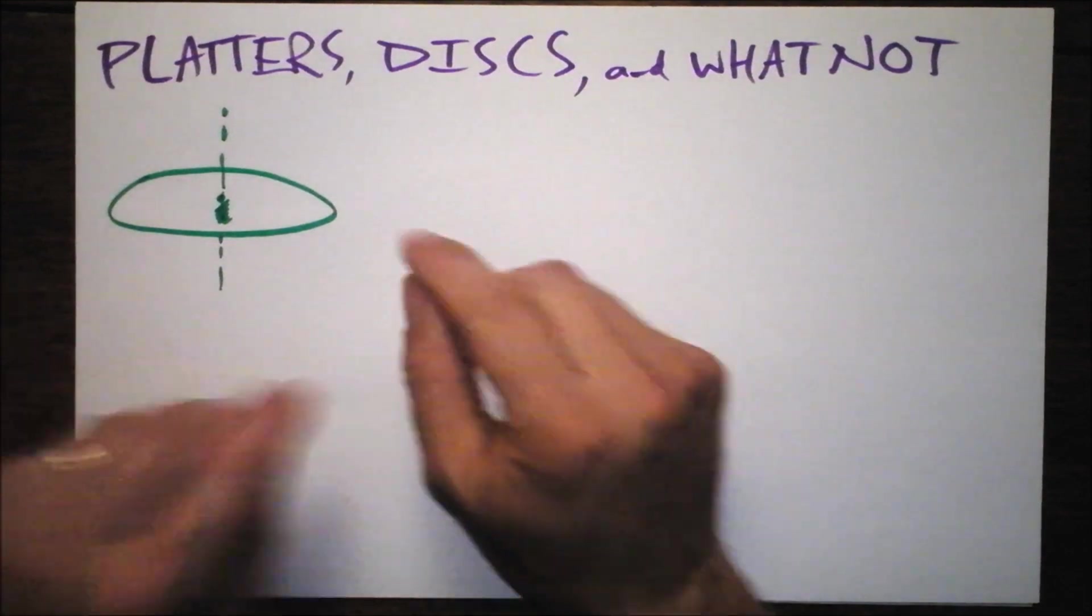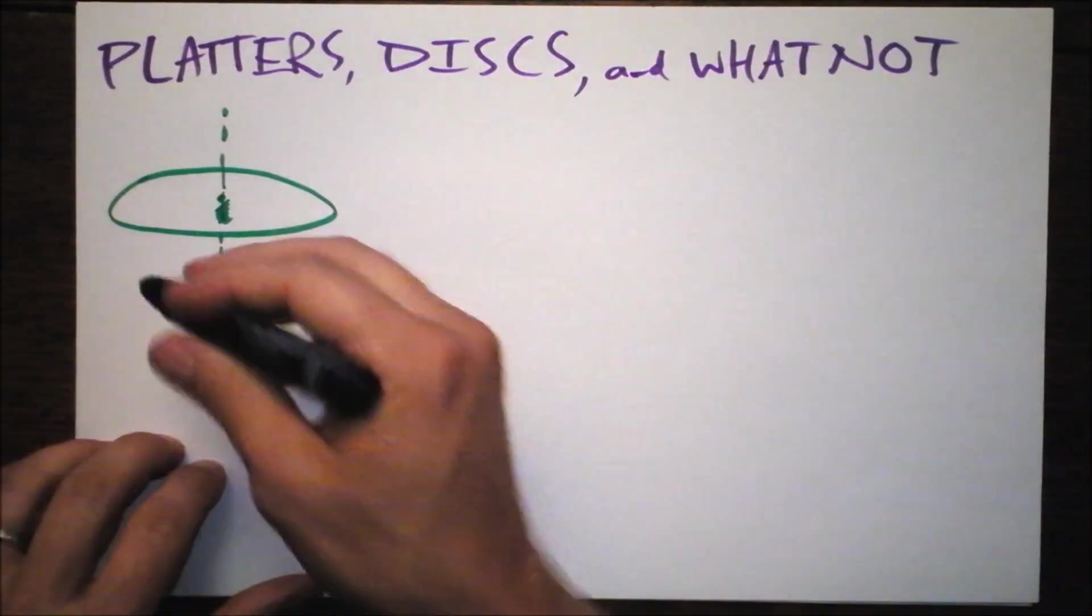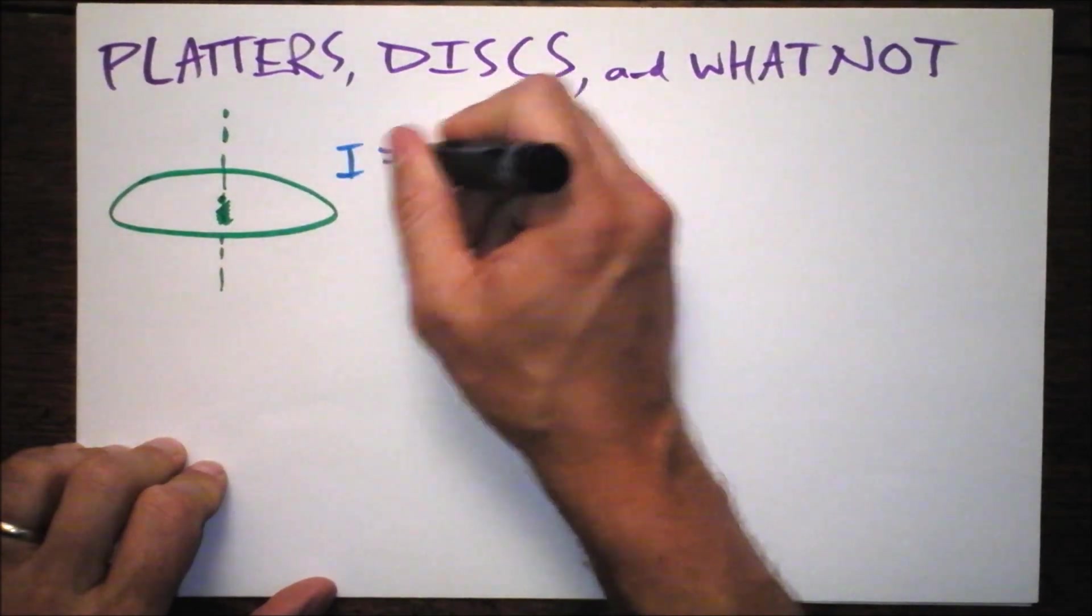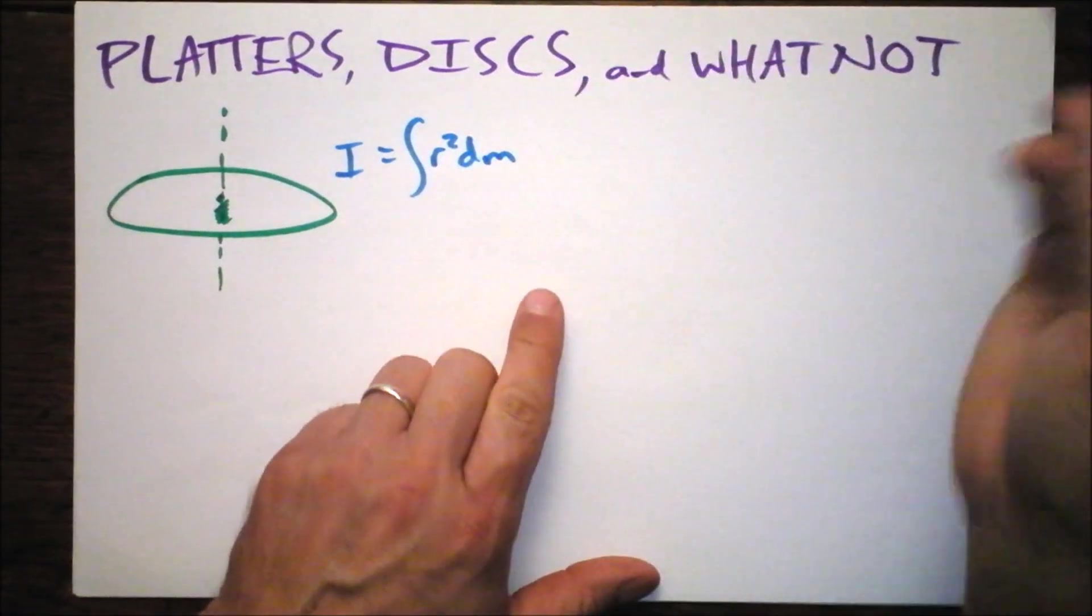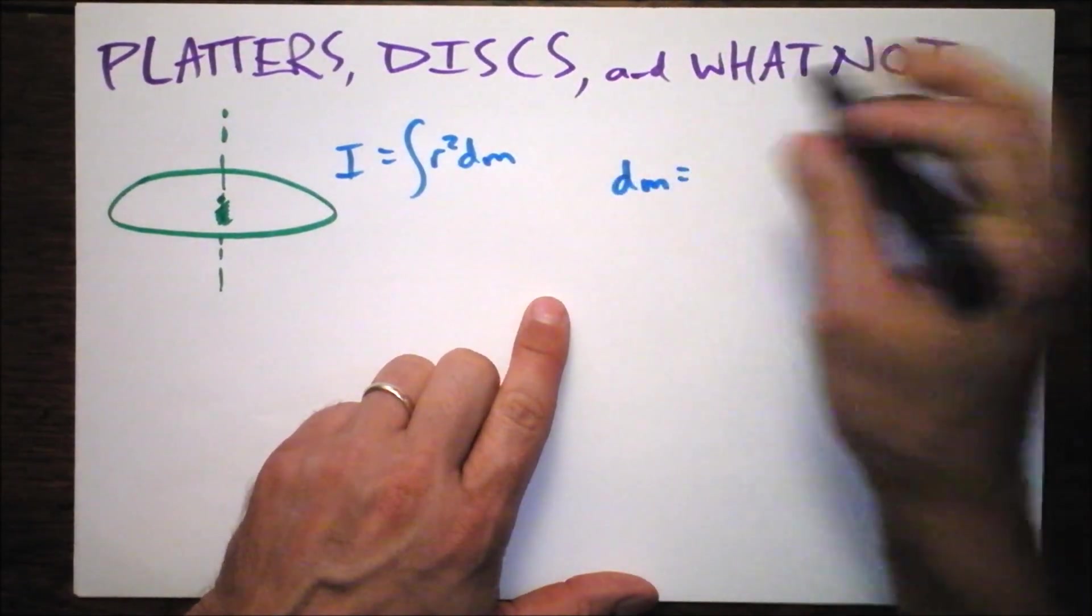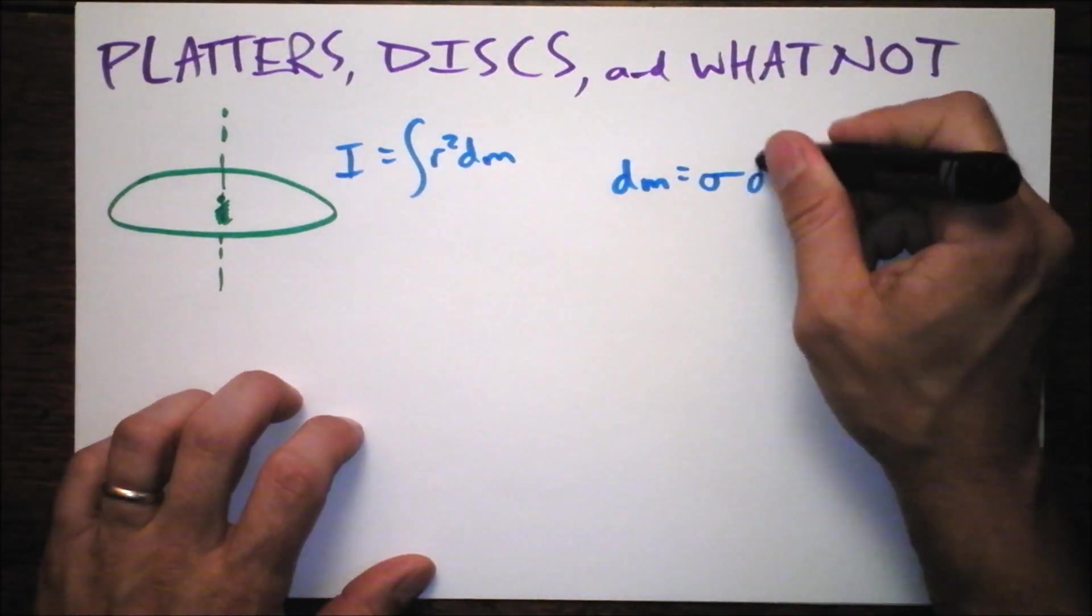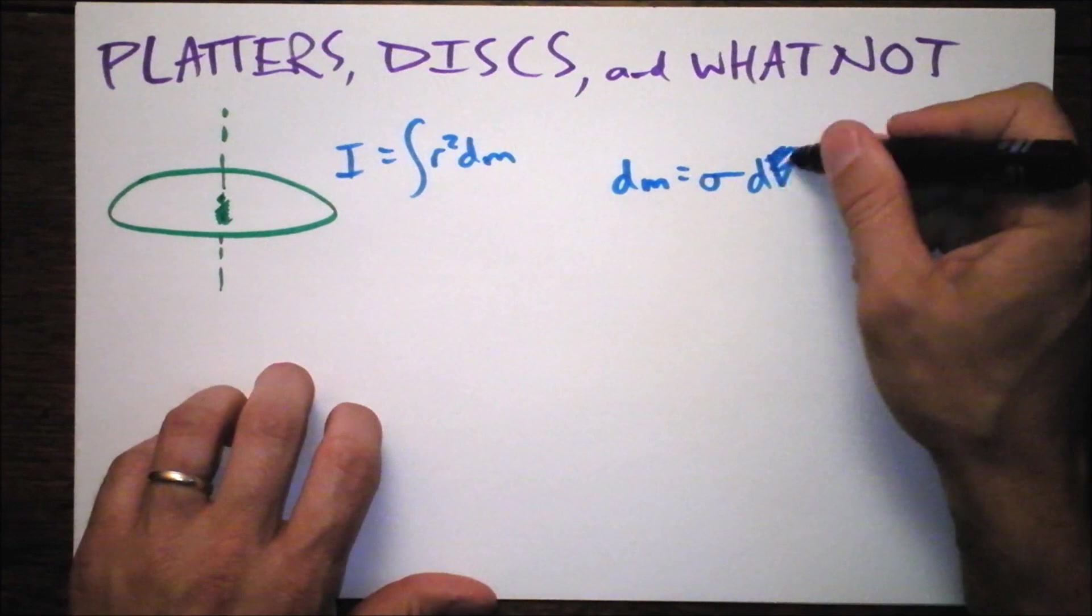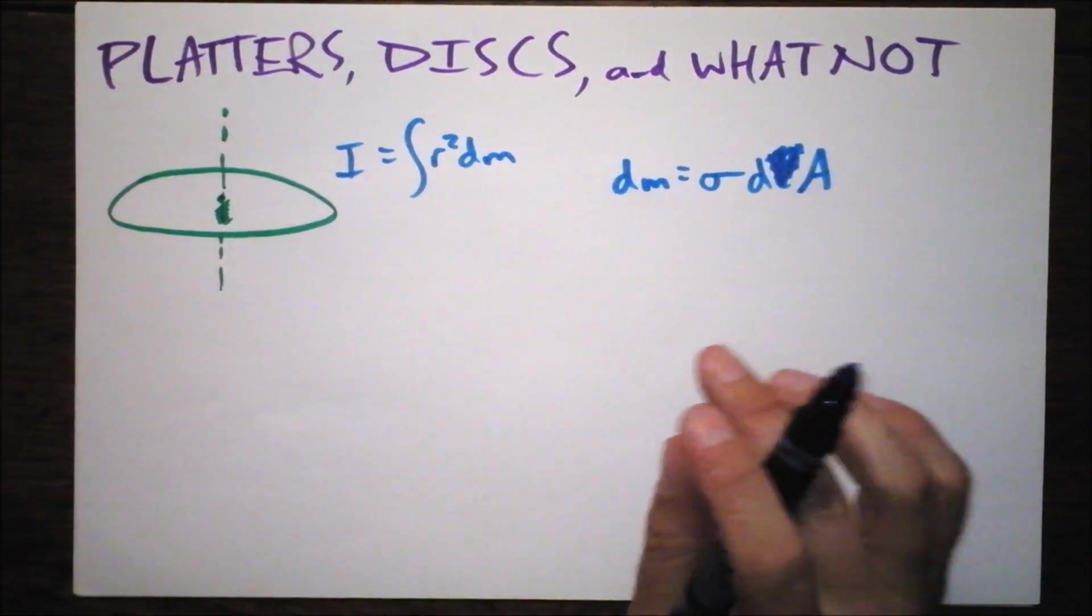But we need to always define what an area slice is. So we're going to be doing our favorite integral, which is the integral of R squared DM. We need to figure out what DM is. So DM is some area density that's going to be represented as sigma times DA. Let's figure out what DA is.